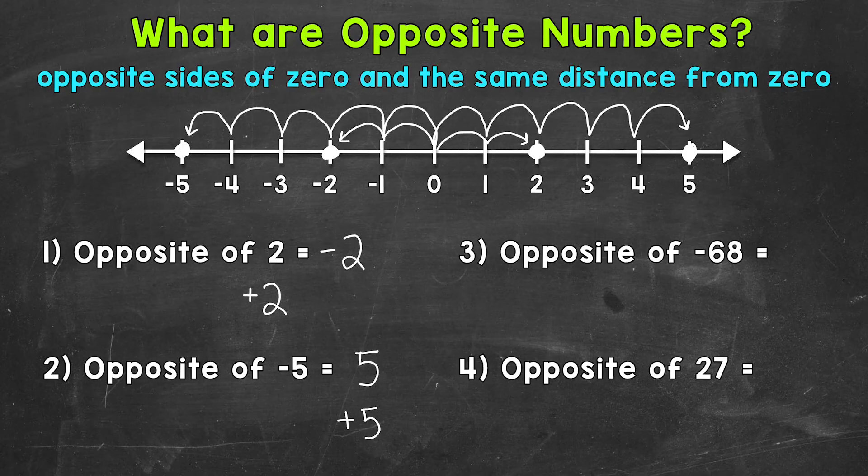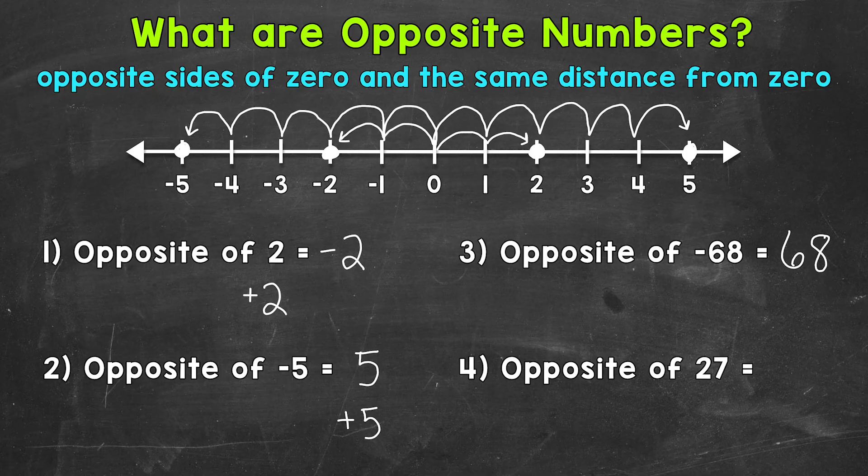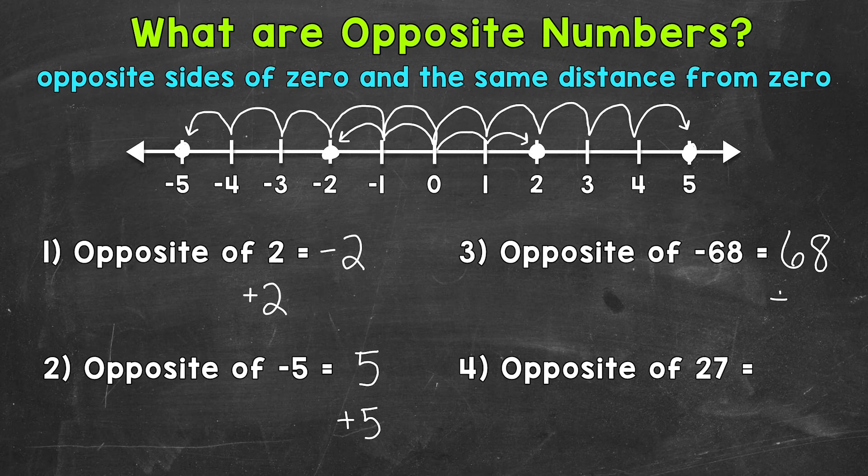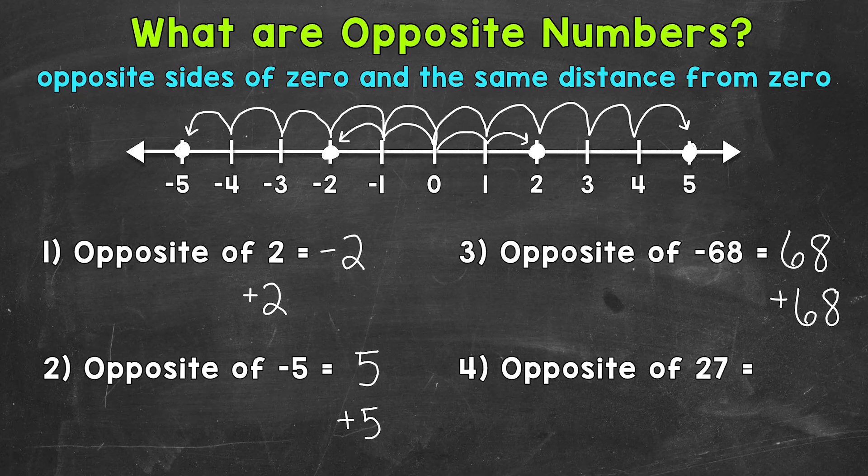Let's move on to numbers three and four. And for these, we're not going to use a number line. At this point, we can write the opposite numbers by writing the opposite sign. So for number three, we want the opposite of negative 68, which that's going to be positive 68. So we can write it without a sign, and that represents a positive 68. Or we can use a plus sign to represent positive 68.